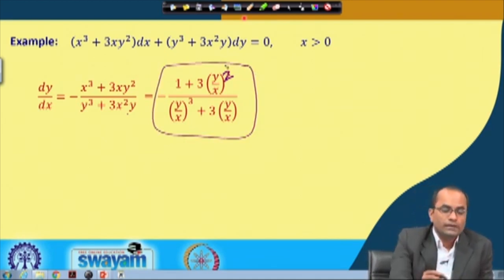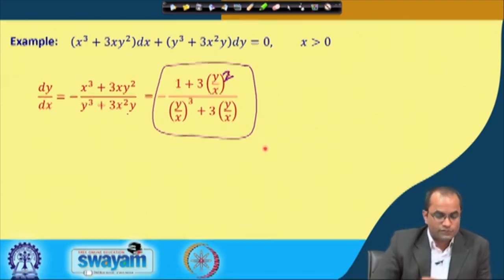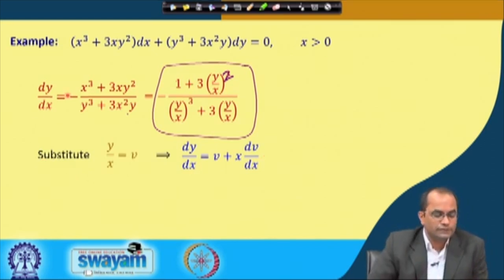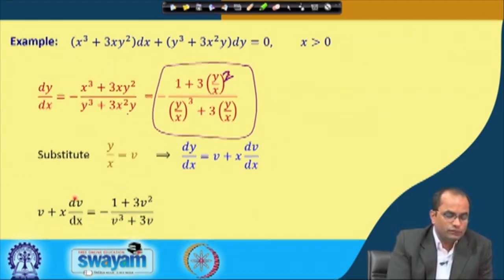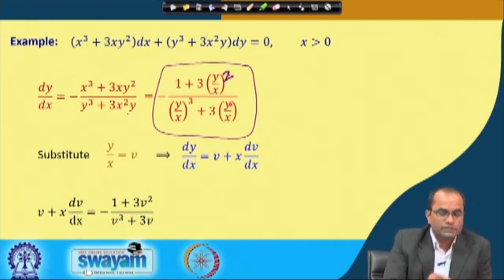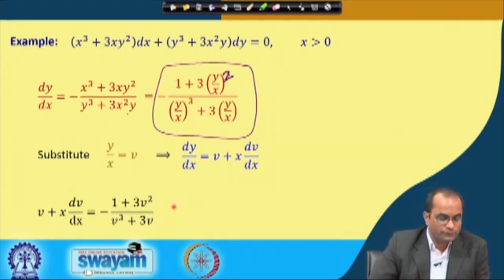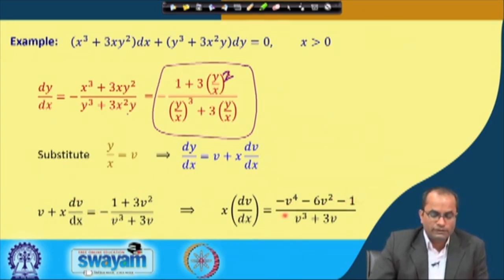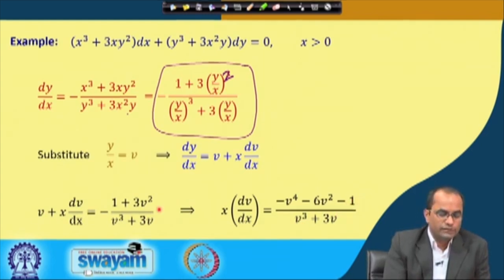This equation is in homogeneous form, and we substitute v = y/x, so dy/dx = v + x·(dv/dx). Substituting into the equation: v + x·(dv/dx) = −(1 + 3v²)/(v³ + 3v). Taking v to the right hand side and simplifying by subtracting v from the right: x·(dv/dx) = (−v⁴ − 6v² − 1)/(v³ + 3v).